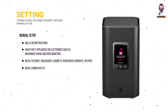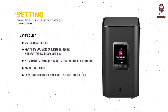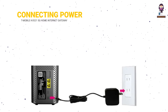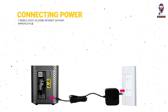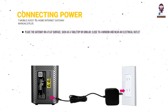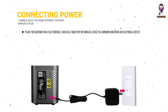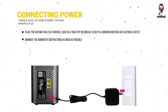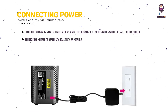The ideal location should also be near a power outlet and on an upper floor of the home or at least 6 feet off the floor. Place the gateway on a flat surface, such as a tabletop or similar, close to a window and near an electrical outlet. Minimize the number of obstructions as much as possible.